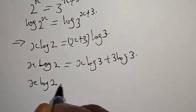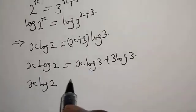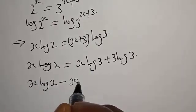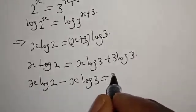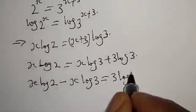x log 2, if this x log 3 crosses to the other side will be minus x log 3, is equal to 3 log 3.